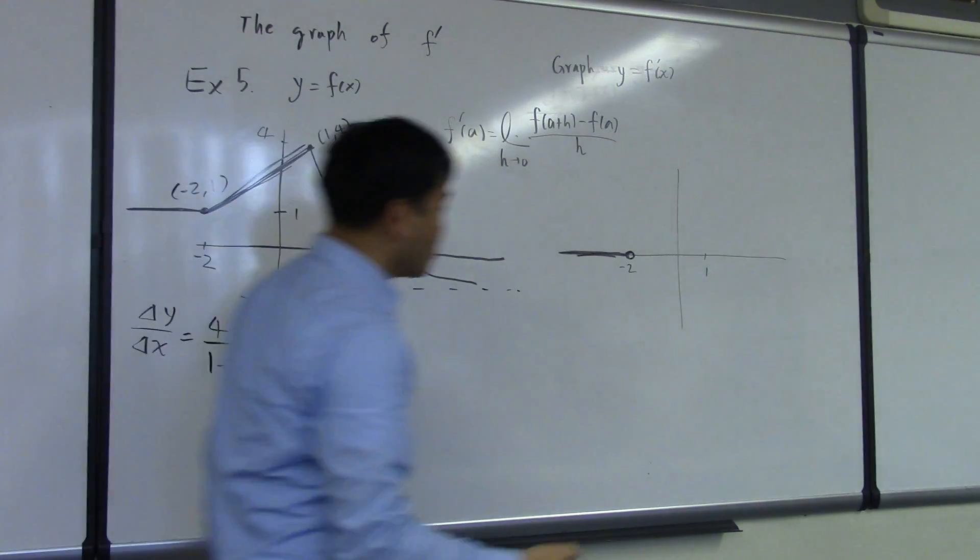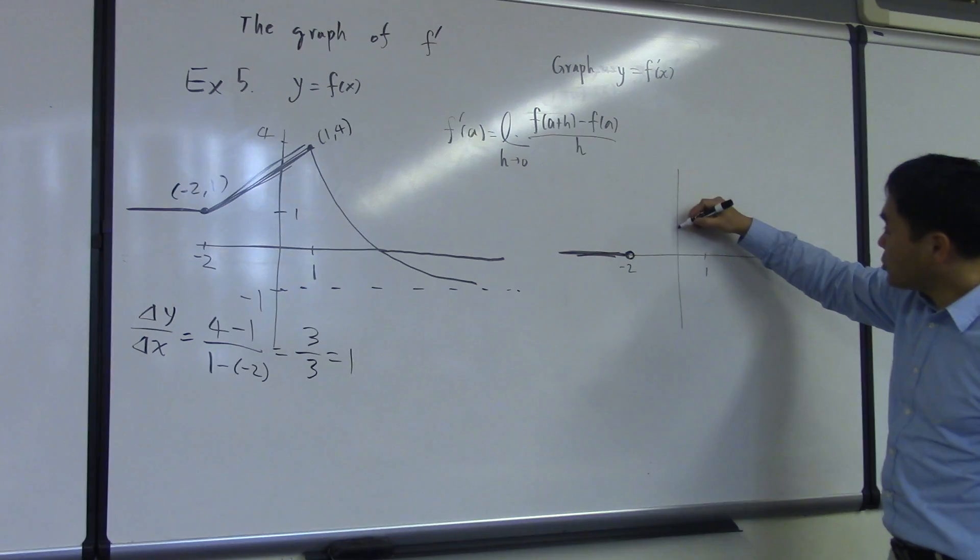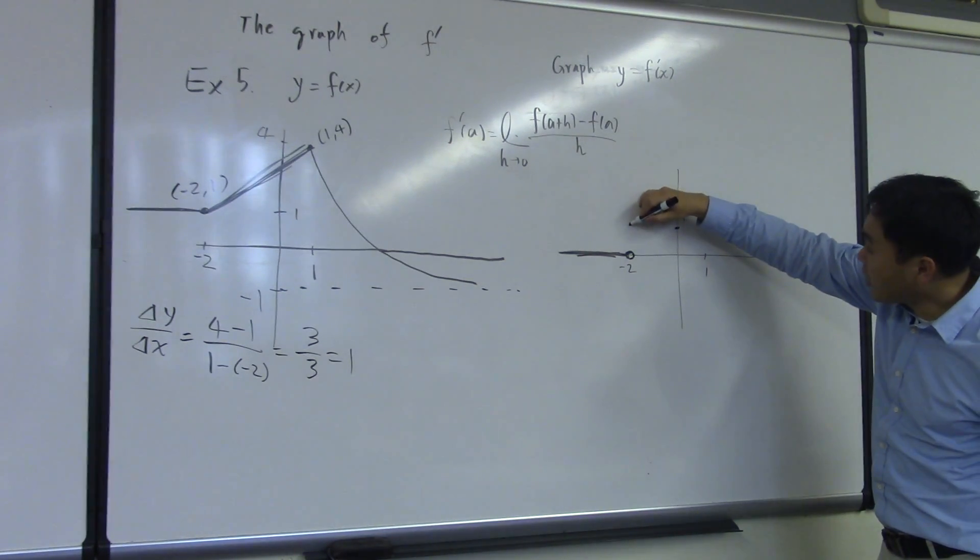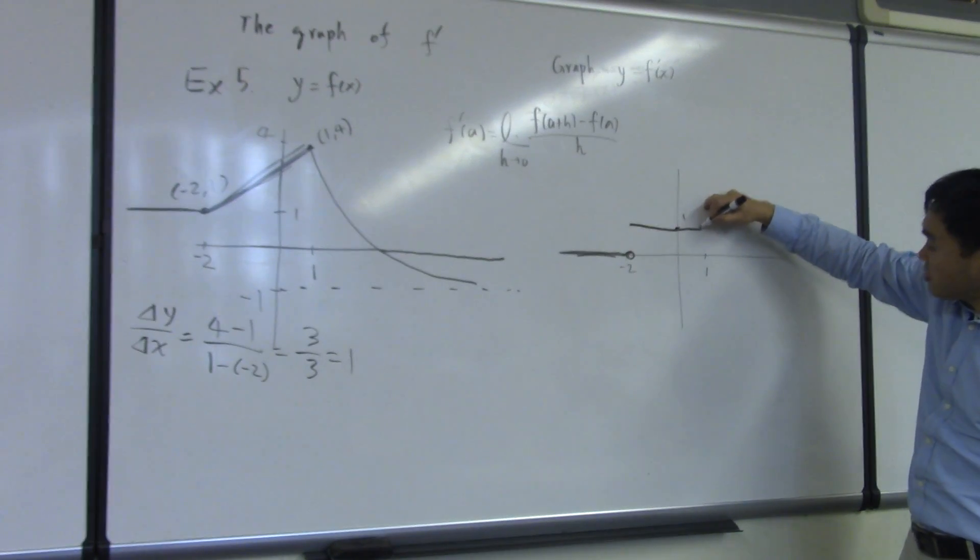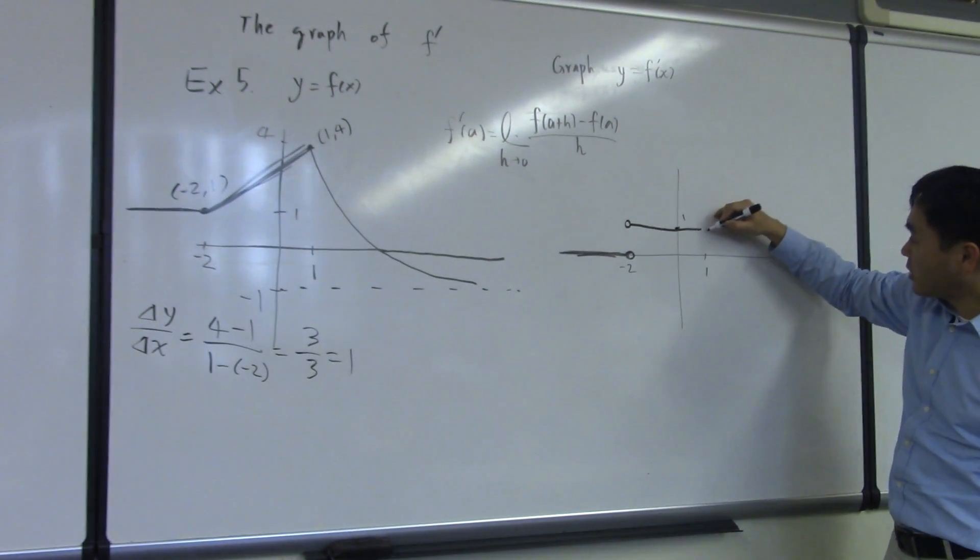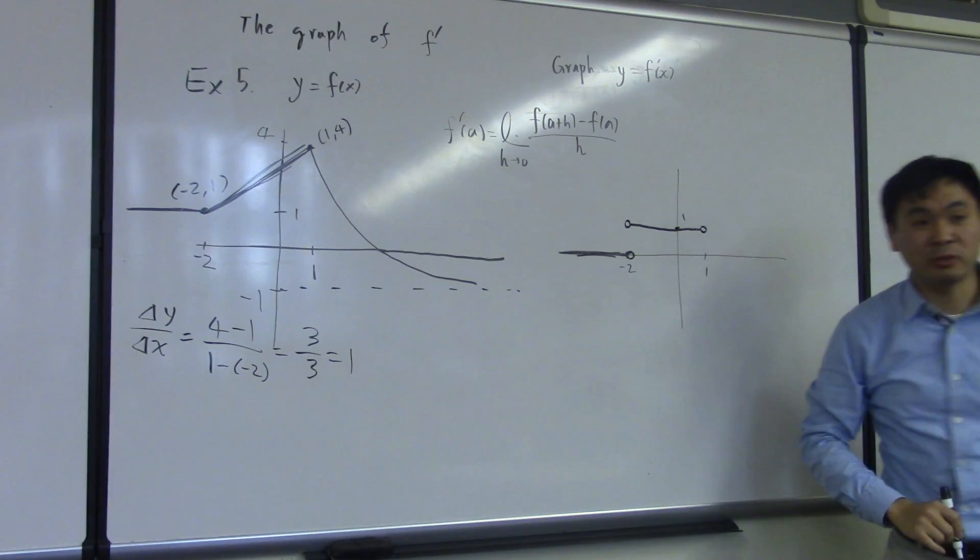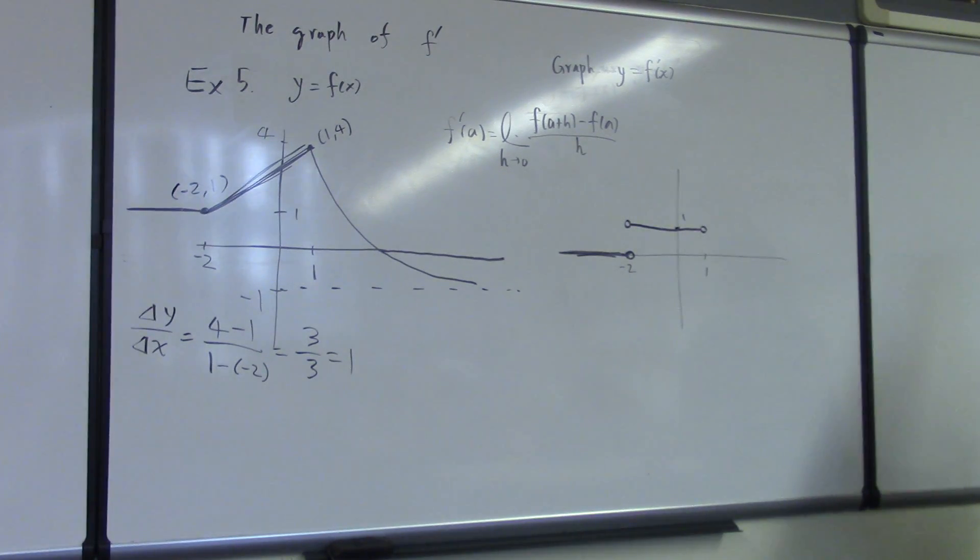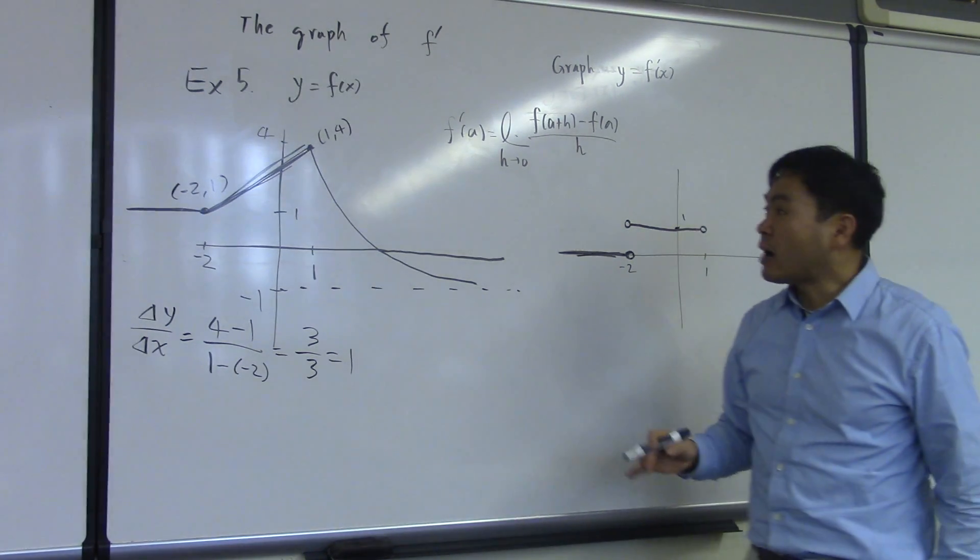So, we know that between negative 2 and 1, the value of the derivative is 1. And I, again, put open circles at the end points, because at those points, the derivative shouldn't have any value.